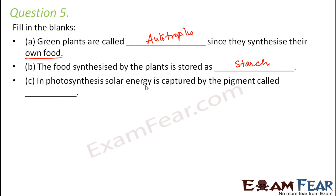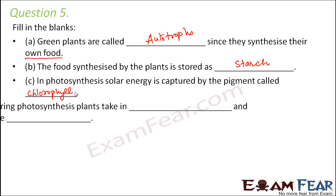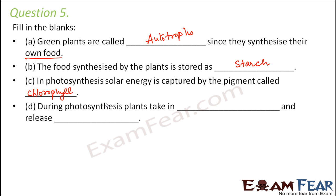In photosynthesis, solar energy is captured by the pigment called chlorophyll, and due to the presence of this pigment, the leaves are green in color. During photosynthesis, plants take in carbon dioxide and give out oxygen.